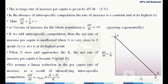The per capita rate of increase is given by (dn/dt)·(1/N). In the absence of intraspecific competition, the rate of increase is constant and at its highest — equal to r at point A, so (dn/dt)·(1/N) = r, representing exponential growth. Adding intraspecific competition, the net per capita rate of increase is unaffected near N = 0 (point A) but approaches 0 at point B when N equals K.